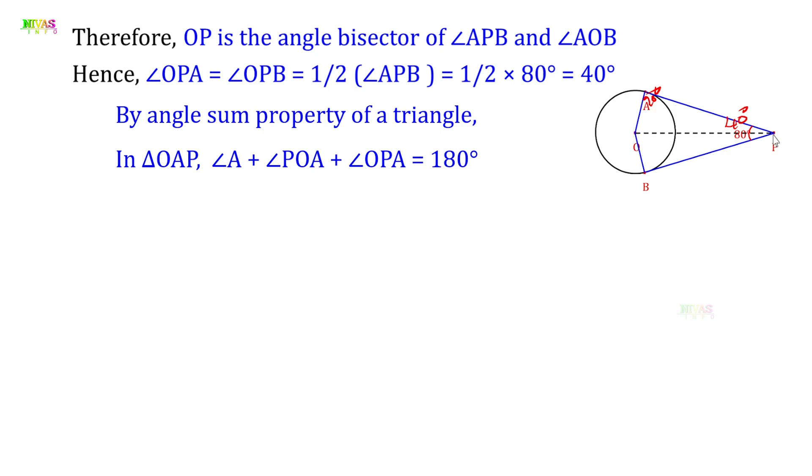By angle sum property of triangle, in triangle OAP, angle A plus angle POA plus angle OPA equals 180 degrees. Theorem 9.1 states that the tangent at any point of a circle is perpendicular to the radius through the point of contact. Therefore, OA is perpendicular to AP, so angle A equals 90 degrees.